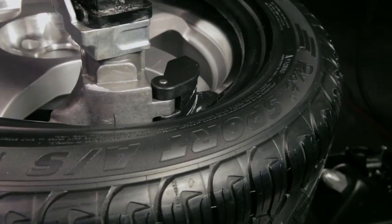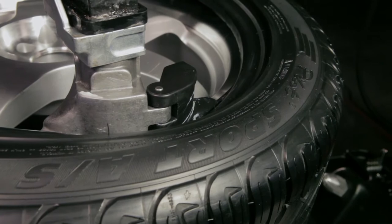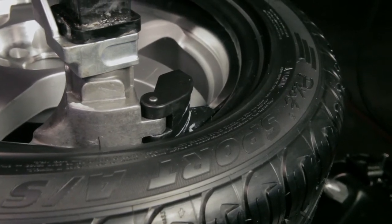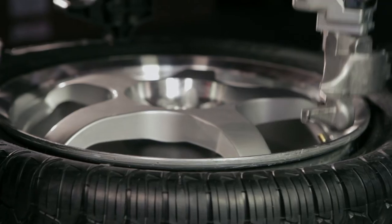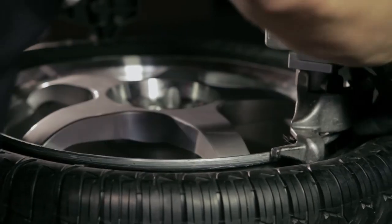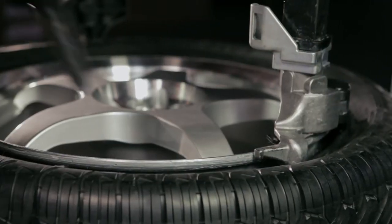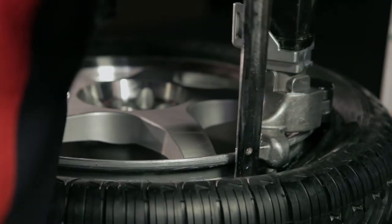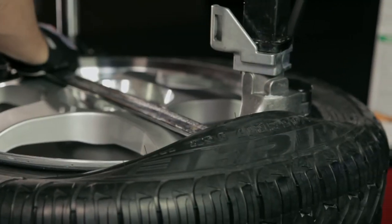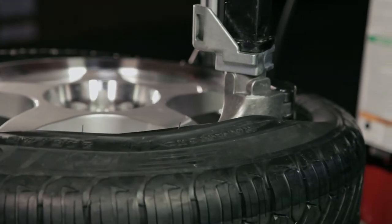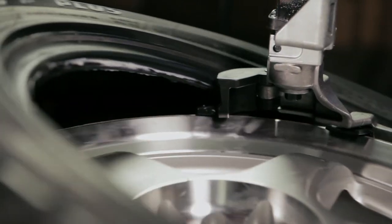The exclusive Coats Hybrid Duckhead combines the stiffness of the traditional metal duckhead required to dismount the toughest tire with a floating plastic tail, protecting the wheel from damage during the mounting process. The protective plastic floating tail hugs the rim and ensures that the tire is mounted properly every time.